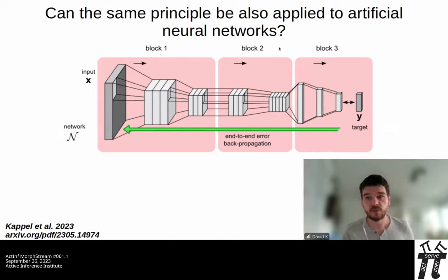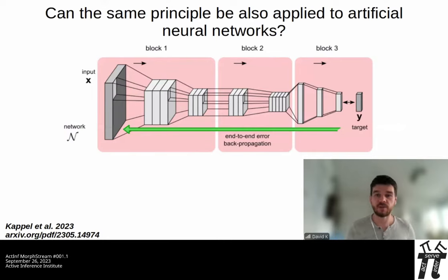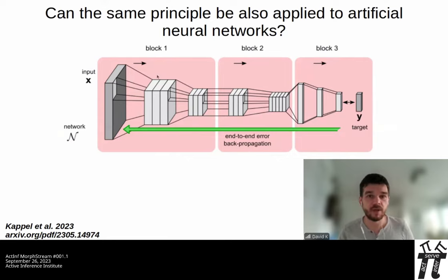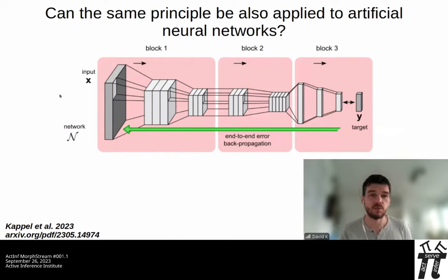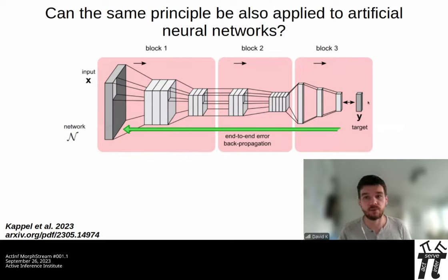We thought this might be a good angle to solve a well-known problem in machine learning. A convolutional neural network with various convolutional layers and dense layers is trained via end-to-end error backpropagation. You have a training set with inputs and targets — for example, pictures of cats and dogs with class labels. The network propagates inputs from the input layer to the output layer, the output is compared to the hand-labeled targets, and the mismatch is backpropagated through all layers to update all weights.